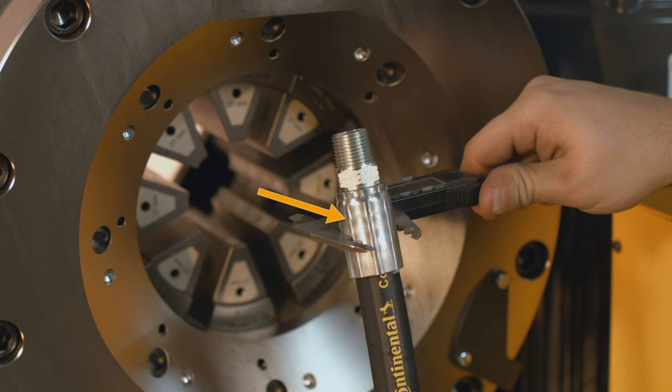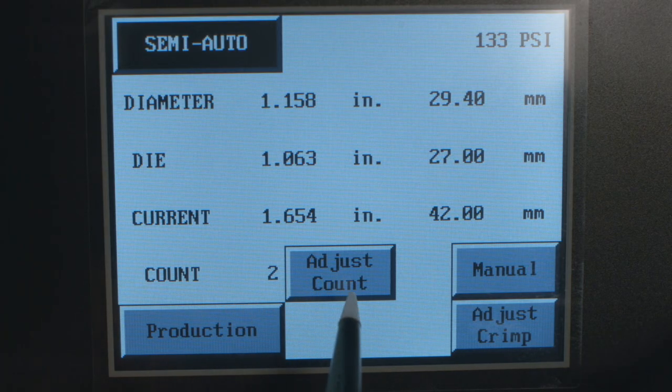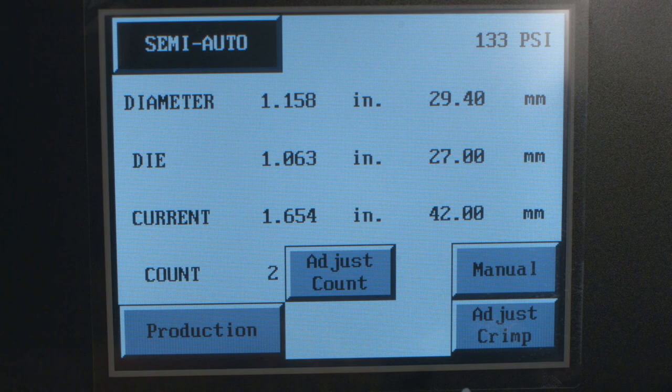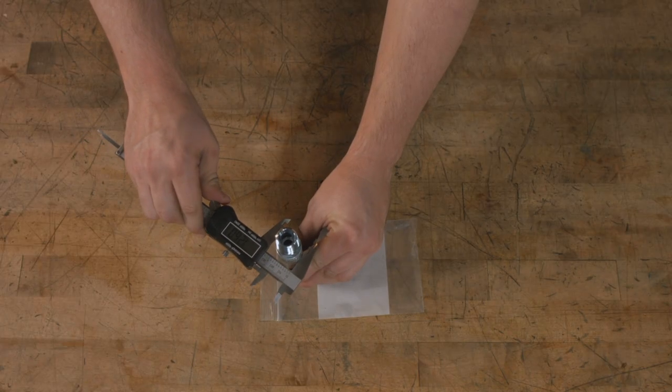If necessary, small adjustments can be made to the crimp size by pressing the Adjust crimp button in the bottom right-hand corner of the controller. To make an adjustment, enter the measurement taken from the calipers.